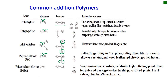Polytetrafluoroethylene, also known as Teflon, is formed when the double bond in tetrafluoroethylene opens. It produces a saturated macromolecule that is very unreactive, non-stick, and has a relatively high softening point. It is used as a liner for pots and pans, for greaseless bearings, as artificial joints, in hot valves, in plumber's tape, and in fabrics.